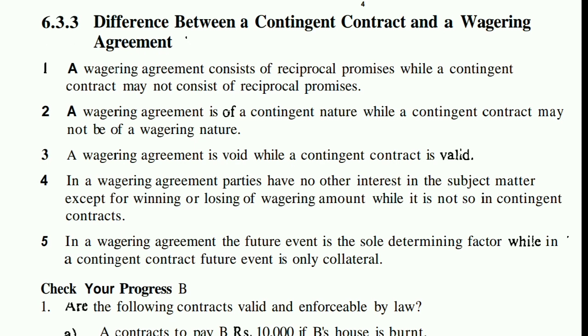In a wagering amount, the future event acts as the determining factor. So these are the five points of difference between a wagering contract and a contingent contract.